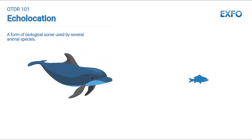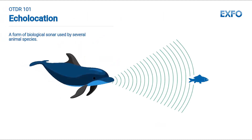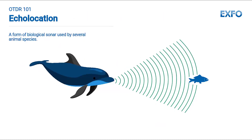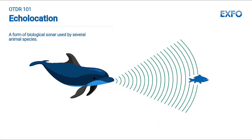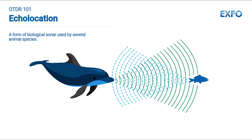Ever heard of echolocation for dolphins? By emitting sounds, when these bounce off or reflect — as in reflectometry — on an object, the animal knows how far that object is, its shape, and movement, if any. The emitted signal is sound, and the transmission medium is water.